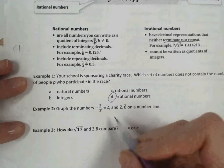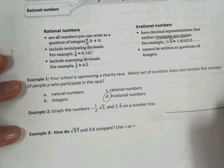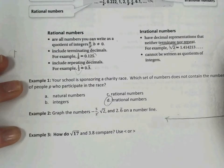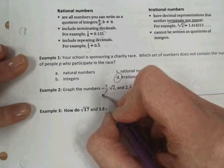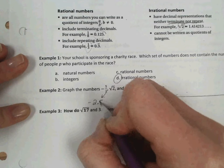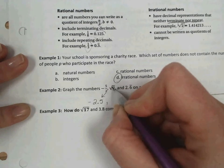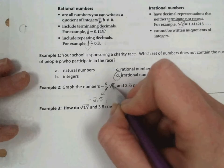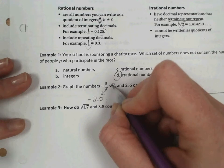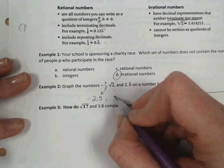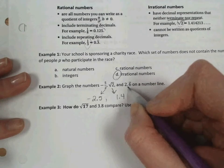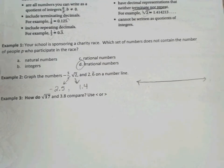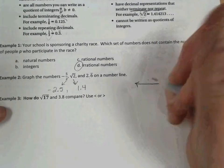Example 2, graph the numbers. So we're going to draw a number line. Looking at these values, negative 5 halves. Sometimes it's easier to write them as a decimal. So we're going to write negative 5 halves as negative 2.5. The square root of 2, you can simply enter into your calculator. And you get, let's see, the square root of 2 is 1.4. And then 2.6 repeating. And that's already written as a decimal.